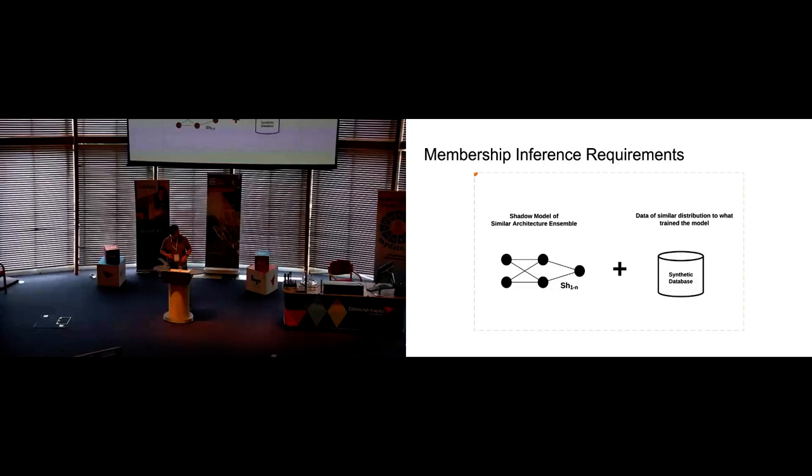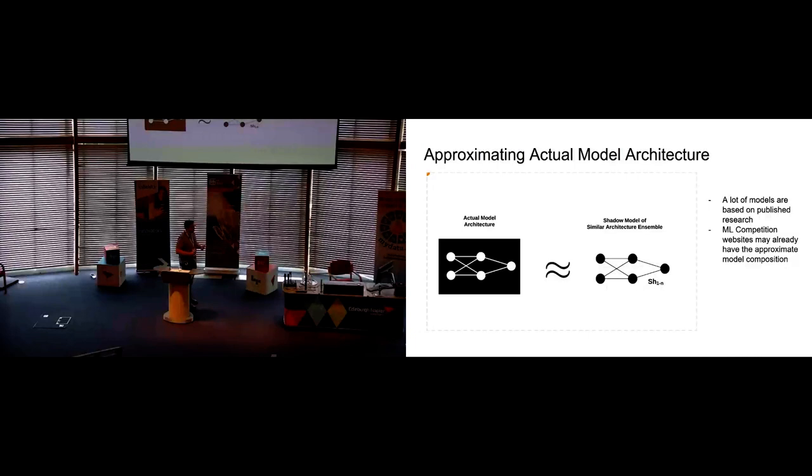In terms of the model of similar architecture, we want an ensemble of these. We call it the shadow classifier, and it's just one to N. We can choose as many as we want in this ensemble. So it's approximately the same in terms of architecture, but not necessarily the parameters of the black box model. And we need our synthetic database.